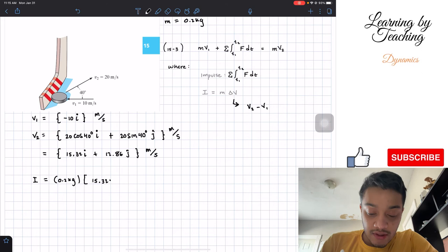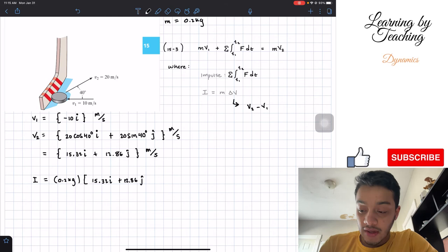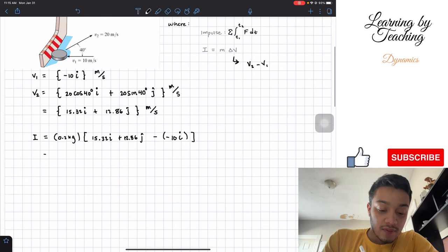We have v2, which is 15.32 in the i direction plus 12.86 in the j direction. Then we have minus v1. V1 is negative 10 in the i direction. I'm going to put a parenthesis so we don't get confused. This is the total change of velocity.